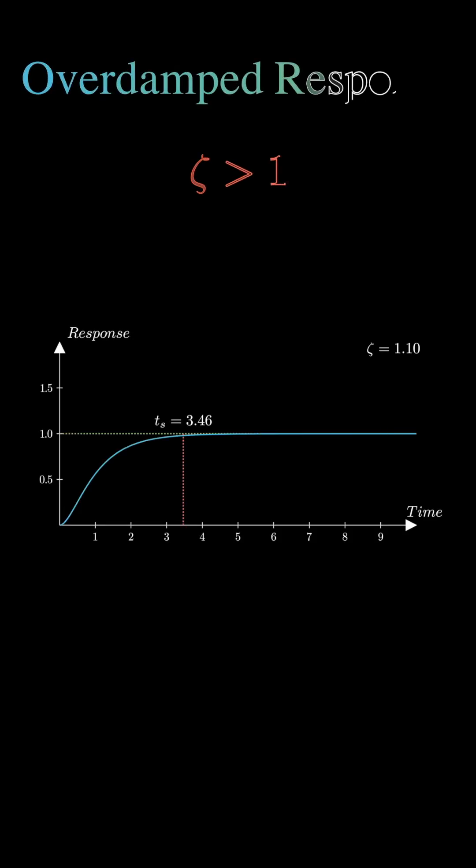If zeta is greater than 1, the system becomes overdamped. The response is stable but noticeably slower. There's no oscillation, but the rise to the target value is sluggish. For example, a system with zeta equal to 2 takes much longer to settle compared to a critically damped one.